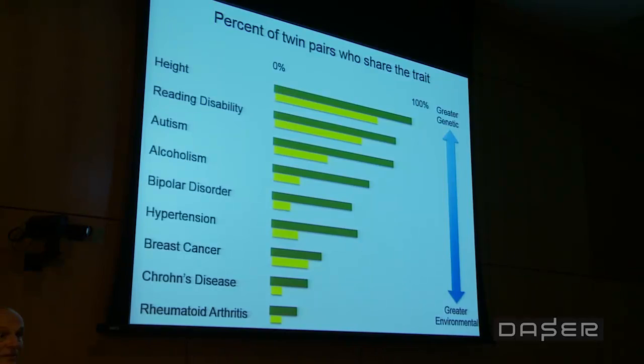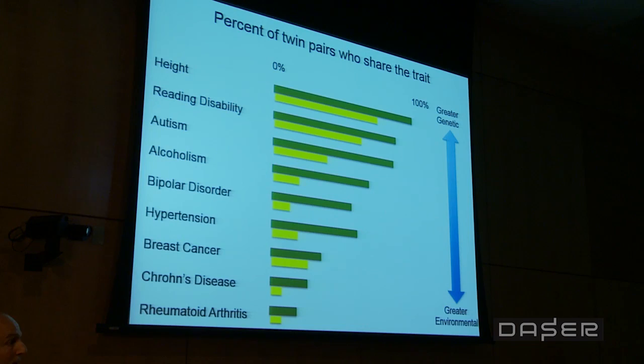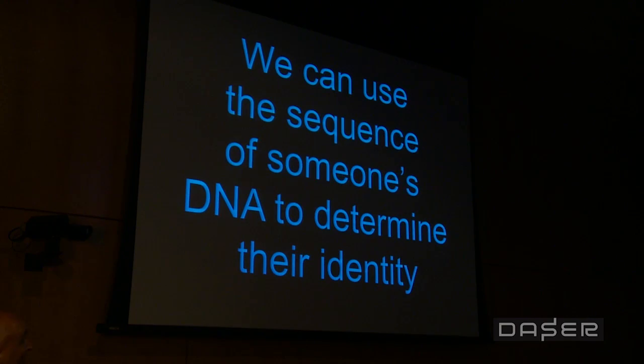People like me who work on DNA often emphasize how important DNA variation is, but that's not always the case. A lot has to do with the environment — where you grew up, when in history you grew up. What we know is that we can use DNA sequence to determine someone's identity, as in forensics, but the sequence of our DNA doesn't determine either our identity or our destiny.